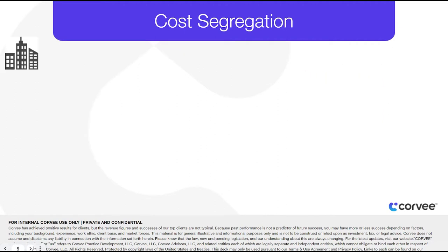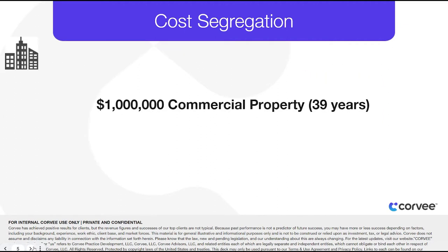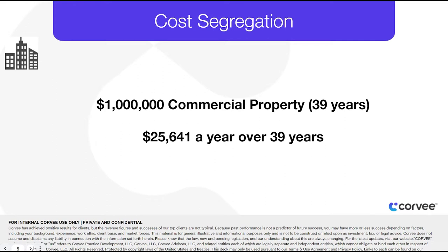This means that on a $1 million commercial property, you would only be able to take $25,641 per year in depreciation. If kept for the full 39 years, the entire $1 million in this example would eventually depreciate and be expensed.